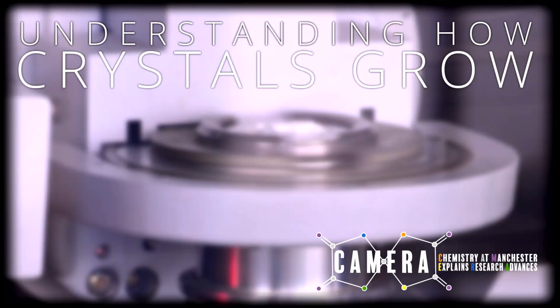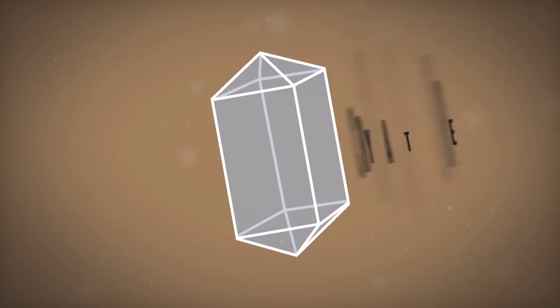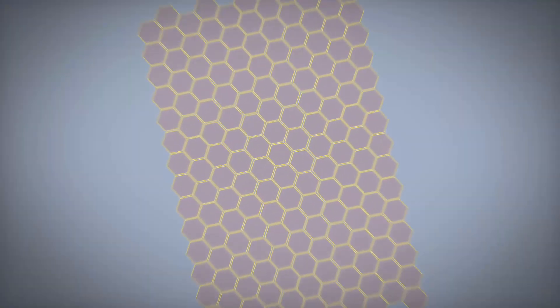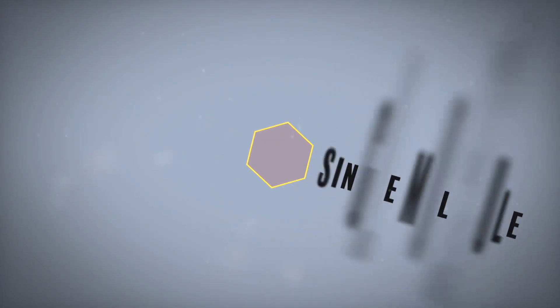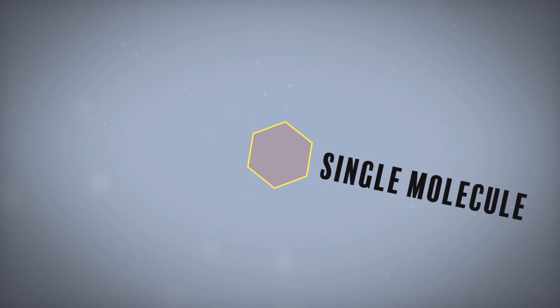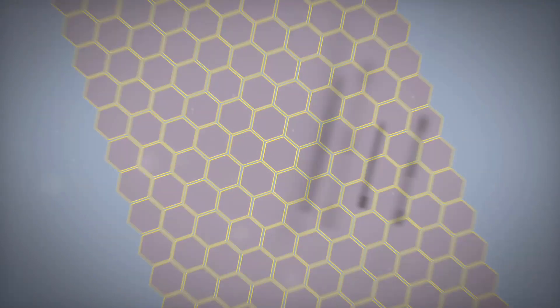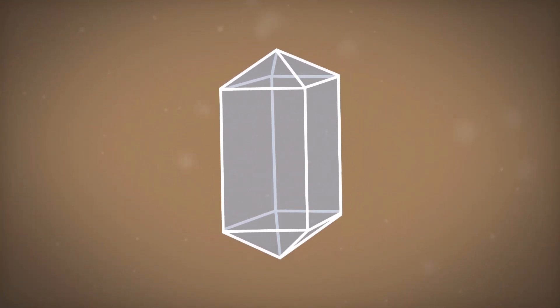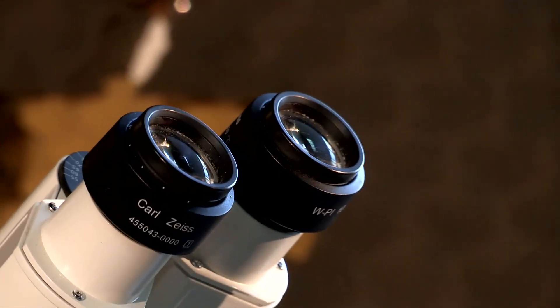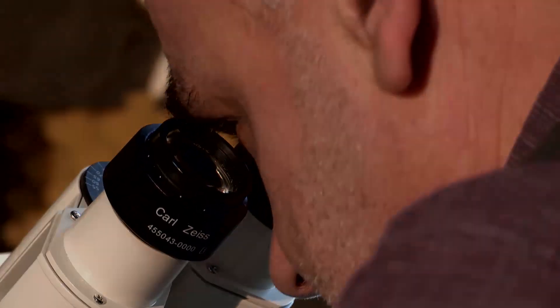Crystals can grow in lots of different environments, but no one really understands how they grow. What crystals are is a regular array of pretty much the same building block — that building block could be one particular molecule or a collection of related molecules. When taken as a unit, they are repeated throughout the crystal. You have to ask: how does that happen? When one molecule comes along to the growing crystal face, how does it know to align itself in the right way? These are really fundamental questions about how matter organizes itself.